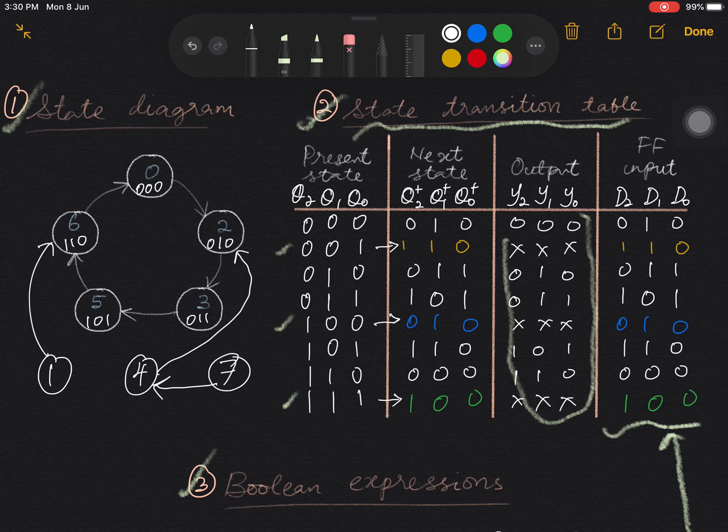So we can already conclude that this counter, this particular counter is a self-starting counter because it has the ability to enter the correct sequence even though it starts at one of the unused states. For example, if it starts with number 1, then it will go to number 6 and then circulates in the correct sequence.